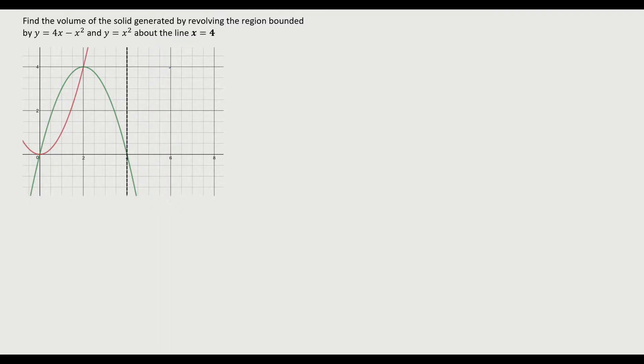Hello, in this video we're going to look at finding the volume of a surface by revolution. Find the volume of the solid generated by revolving the region bounded by y equals 4x minus x squared and y equals x squared about the line x equals 4.